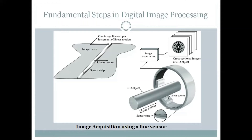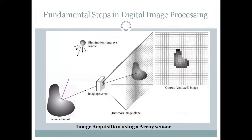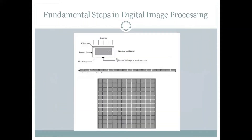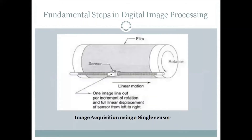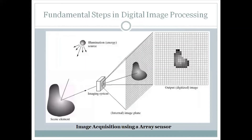Moving on to the next sensor: the array sensor. Array sensor — here we call it a data sensor. Array sensor is used in digital image, like image in 0s and 1s. This is the benefit of this array sensor; we can use this array sensor for two-dimensional images.